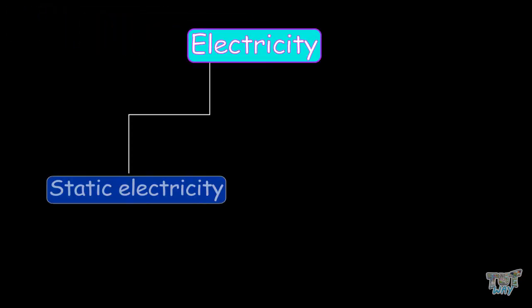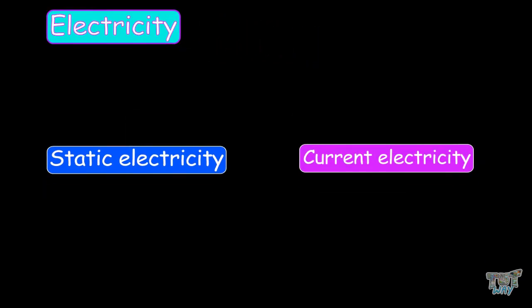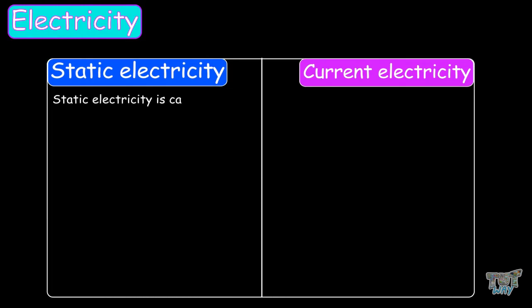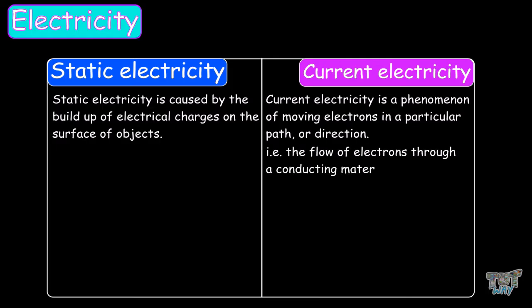So now we know that electricity is of two types, static electricity and current electricity. Now let's contrast these two types of electricity. Static electricity is produced by the buildup of electrical charges on the surface of objects, and current electricity is a phenomenon of moving electrons in a particular path or direction, that is, the flow of electrons through a conducting material.